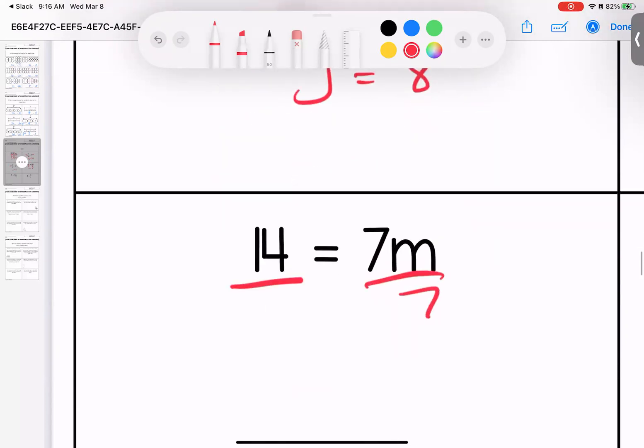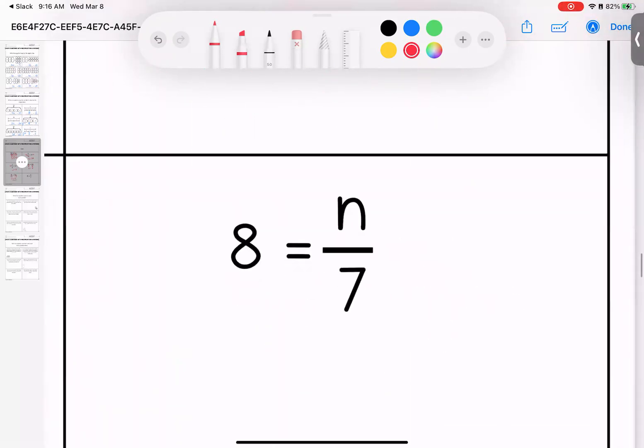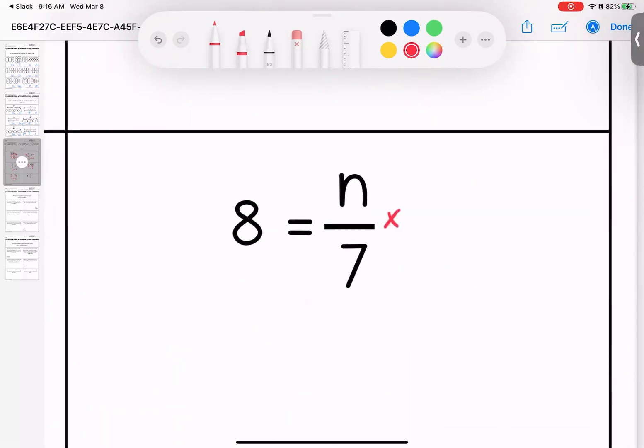Sticky numbers, I divide. Doesn't matter what side it is on. 14 divided by 7 equals m. Best practice to write the variable first. Fractions mean divide. Opposite is multiply. So this would be 56 is equal to n.